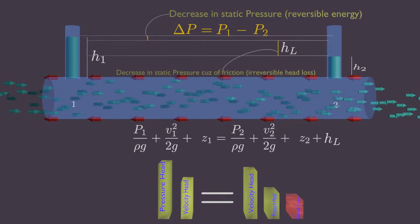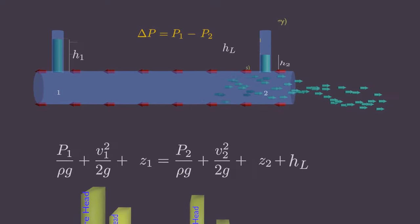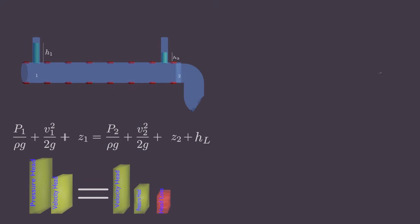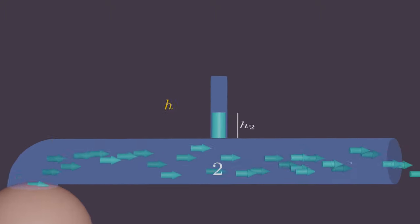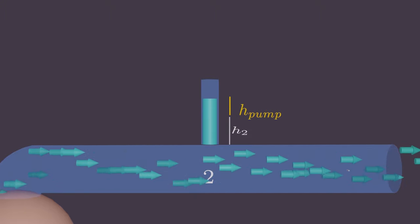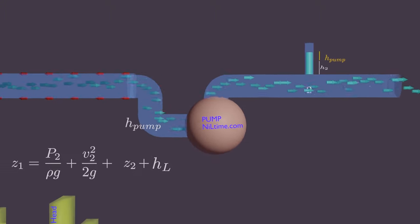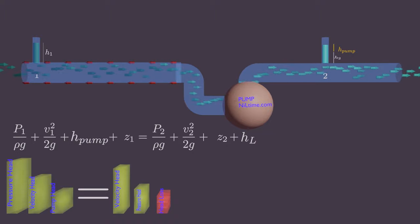So how can we overcome this head loss? Now, here comes the role of pump. With pump we can give extra energy to the fluid that can overcome head loss. Then again we come back to the ideal fluid state.